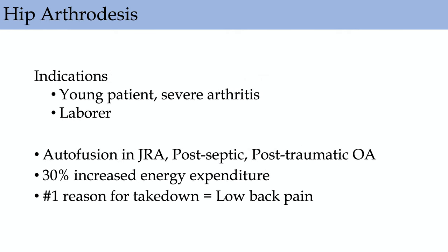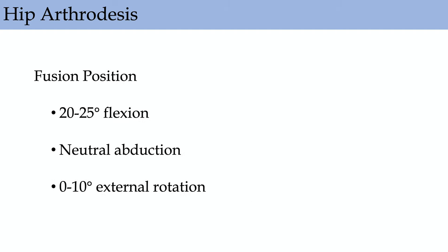For hip arthrodesis, indications are young patients with very severe arthritis — typically laborers. Any joint you're considering fusing is for young laborers; look for that in stem questions. These patients can have autofusion in rheumatoid arthritis, post-septic or post-traumatic arthritis. There's a 30% increased energy expenditure for hip arthrodesis patients. The number one reason for fusion takedown to total hip arthroplasty is low back pain. Fusion position: slight flexion, neutral abduction, and slight external rotation.